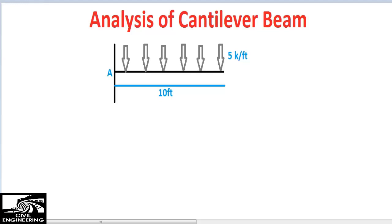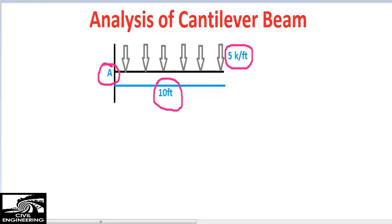Hello guys, in this video today I will teach you the topic of analysis of a cantilever beam. This is a cantilever beam of length 10 feet, and the load coming on the cantilever beam is 5 kips per foot. Only one support is generated, and the whole load will be supported by that reaction only.